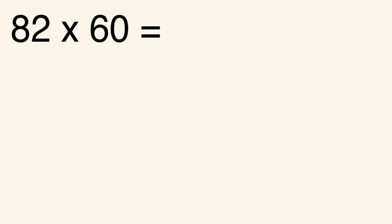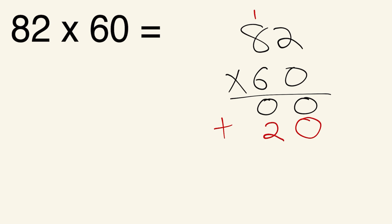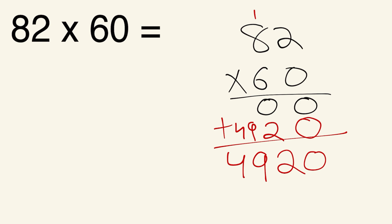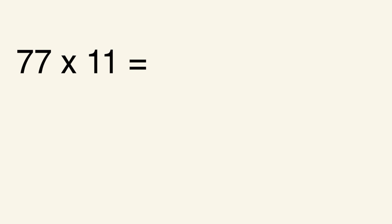Welcome back. Let's do 82 times 60 together. Write it vertically. Anything times 0 is 0, so 0 times 2 is 0 and 0 times 8 is 0. Next, add the 0, then 6 times 2 is 12 — write the 2, carry the 1. Then 6 times 8 is 48, plus 1 is 49. Adding gives us 4,920. So 82 times 60 is 4,920.